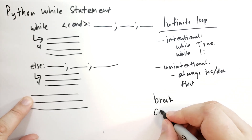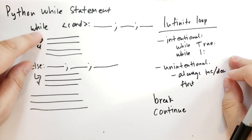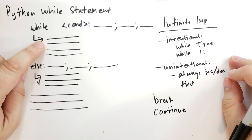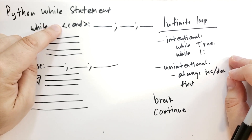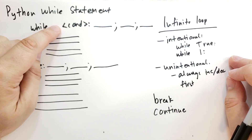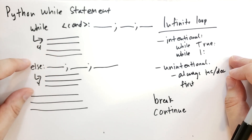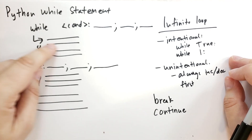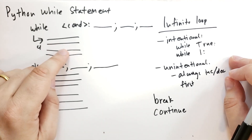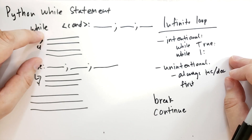The other statement is continue. When the while block hits a continue statement, it stops execution of that block and re-evaluates the condition. If that condition is true, it does another iteration; if it is false, it will run the else block and then continue with the code. Continue is often used to basically short-circuit the block. Break is often used to end looping altogether.